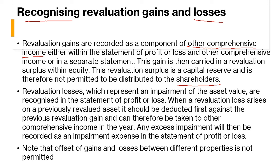Revaluation losses, which represent an impairment of asset value, are recognized in the statement of profit and loss. When a revaluation loss arises on a previously revalued asset, it should be deducted first against the previous revaluation gain and can therefore be taken to other comprehensive income in the year. The excess impairment will then be recorded as impairment expenses in the statement of profit and loss. It is important to note that offset of gain and loss between different properties is not permitted.